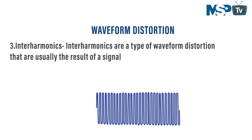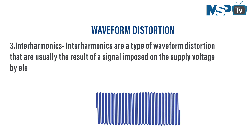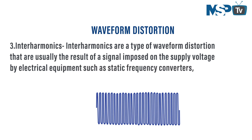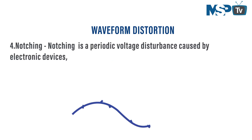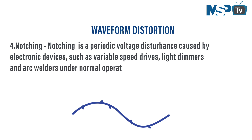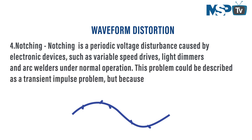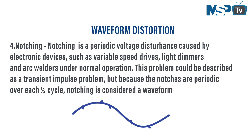Third, interharmonics: interharmonics are a type of waveform distortion usually resulting from a signal imposed on the supply voltage by electrical equipment such as static frequency converters, induction motors, and arcing devices. Fourth, notching: notching is a periodic voltage disturbance caused by electronic devices such as variable speed drives, light dimmers, and arc welders. Under normal operation this may resemble a transient impulse, but because the notches are periodic over a half cycle, notching is considered a waveform distortion problem.